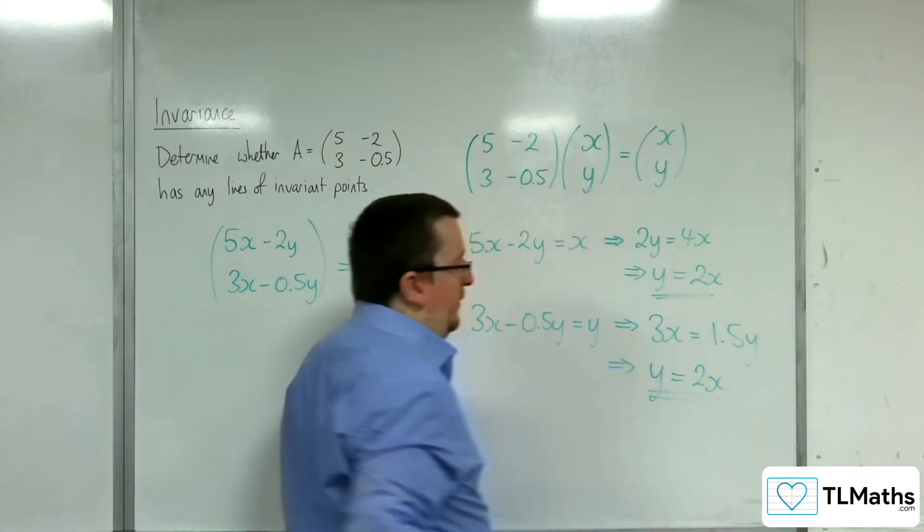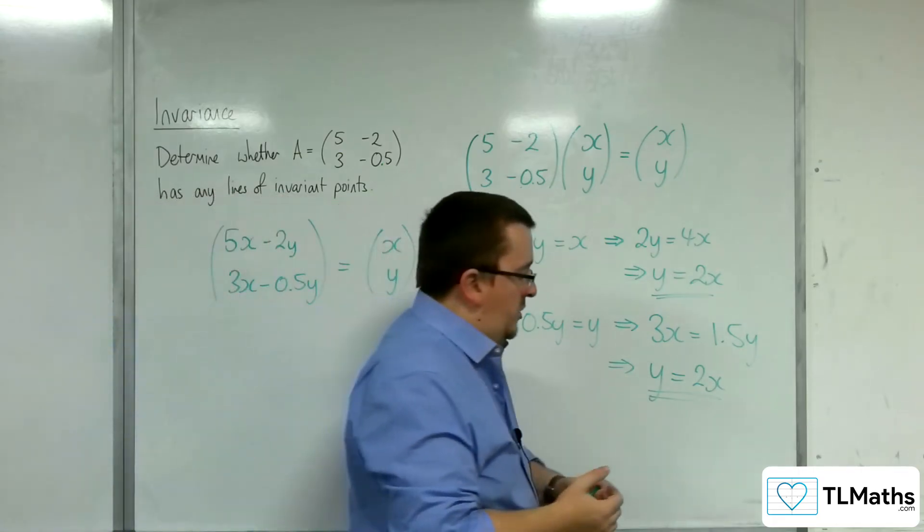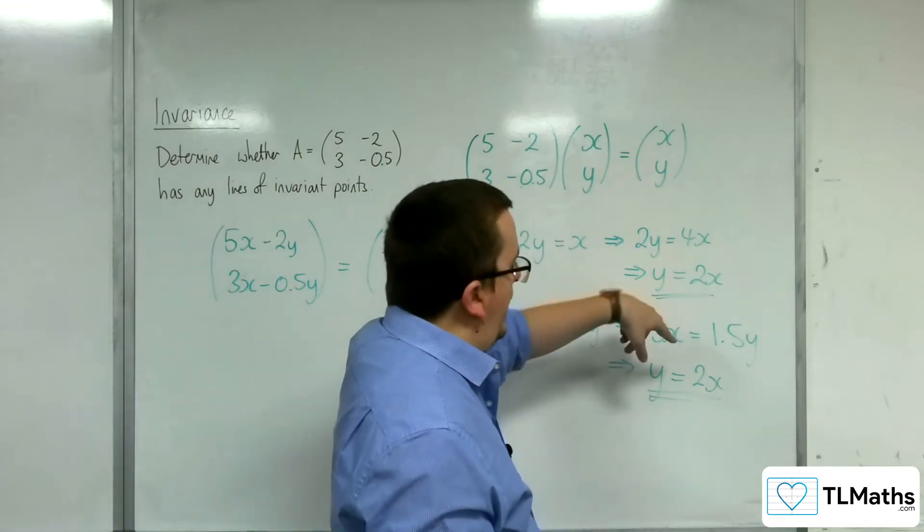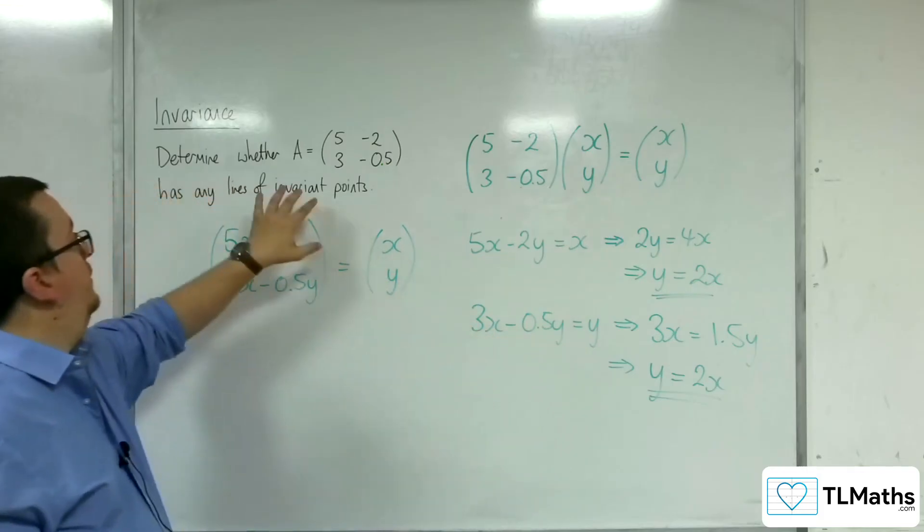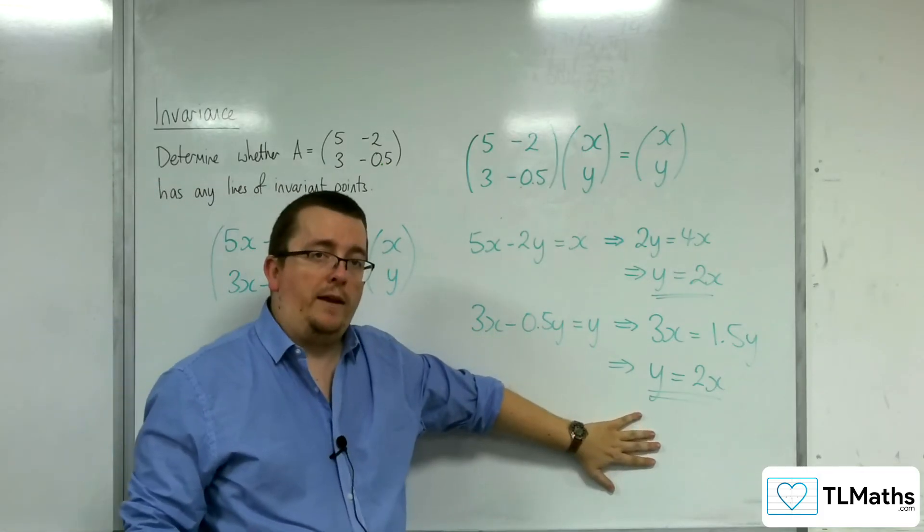And it is this consistency that I have here which means there are invariant points. The line of invariant points is y equals 2x.